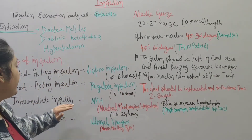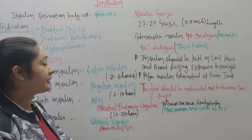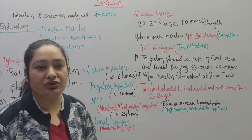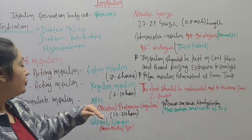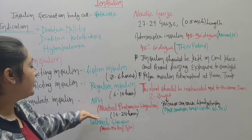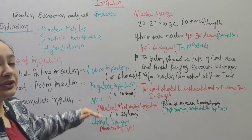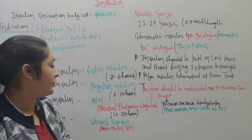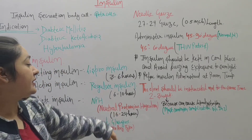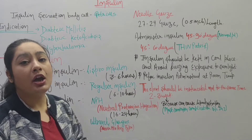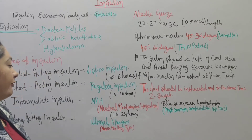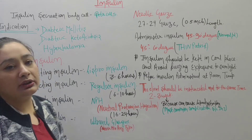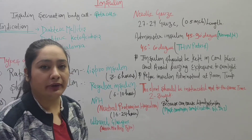Next is intermediate insulin. An example that comes up in competitive exams is NPH — Neutral Protamine Hagedorn. The duration of action of NPH is 16 to 24 hours.